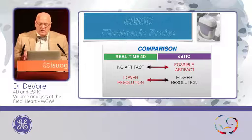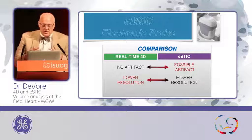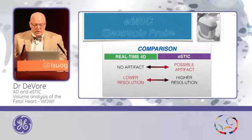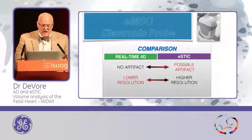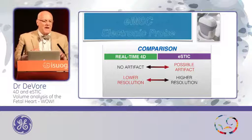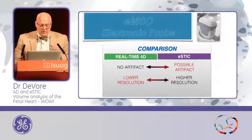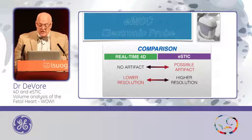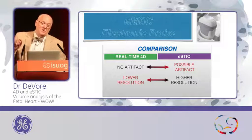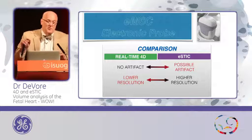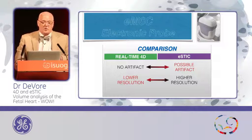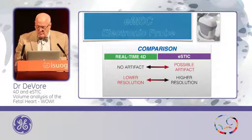If we drill down on the drawbacks and benefits of each approach — real-time 4D or eSTIC — real-time has no artifact in the B and C planes, period. You don't see artifact because it acquires so fast it creates a single volume. However, the resolution is a little bit lower than the eSTIC. The eSTIC has a potential for artifact, but because it sweeps so fast, you rarely see it, and it has the ability for higher resolution along with other properties we'll see in a moment.